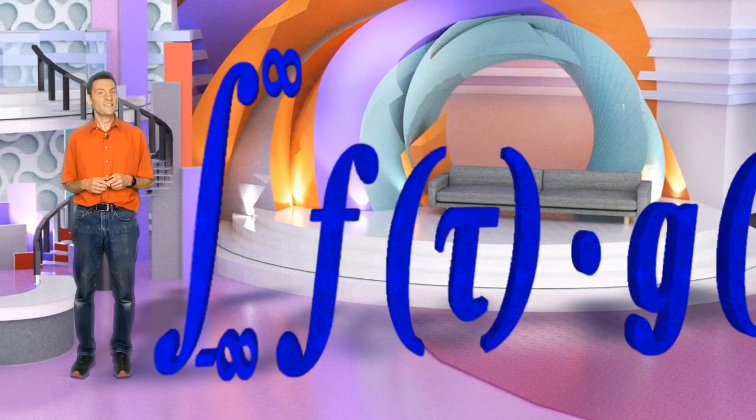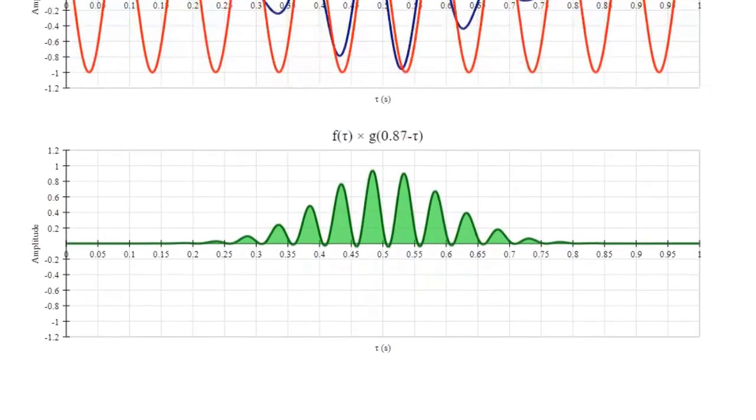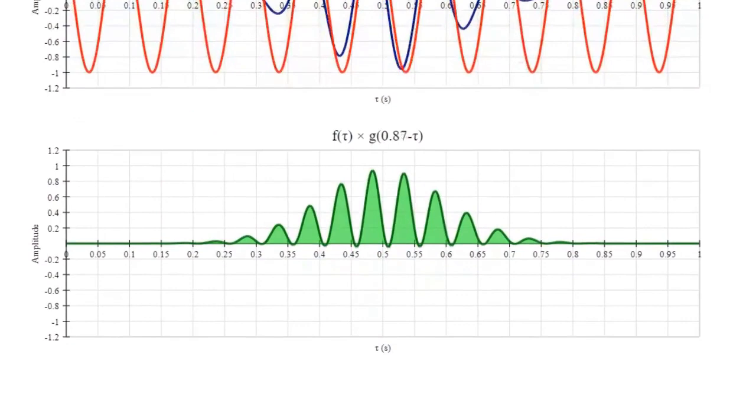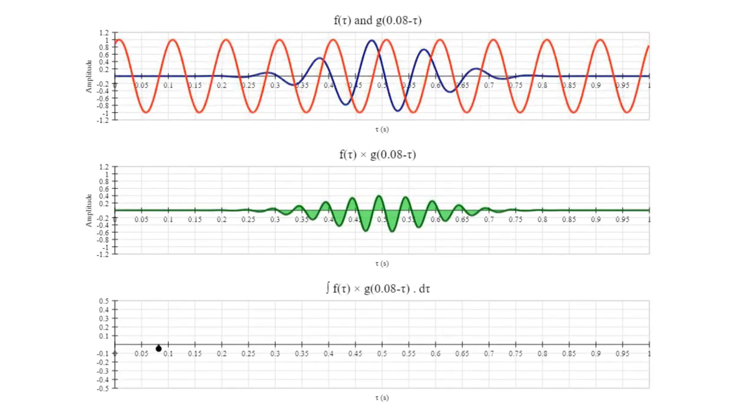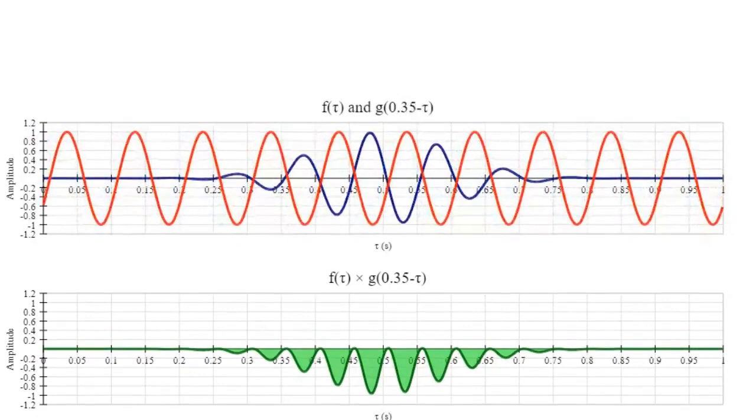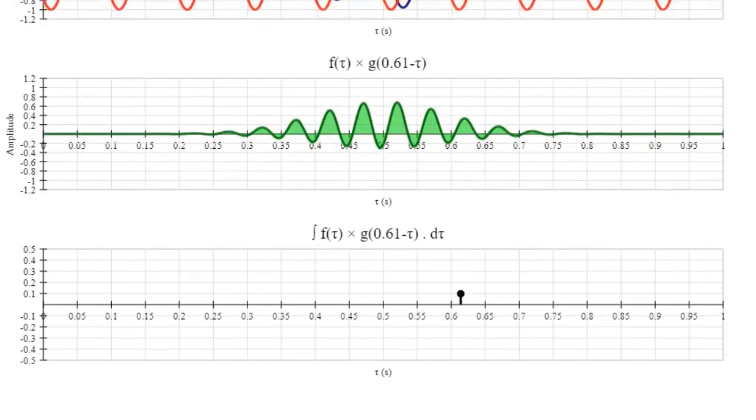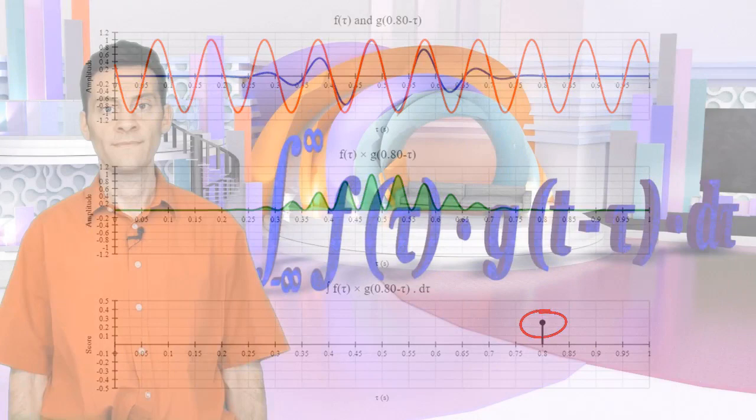The next part of the equation tells us to integrate. Integration means finding the area under the graph. Let's plot the result of the integration on a third graph. As t changes and the two signals move closer together, the area under the multiplied graph increases, meaning that the result of the integral increases too. When g of tau and f of tau converge, the result of the convolution reaches a maximum value. We could use this value as a sort of score, to tell us how well matched g of tau and f of tau are.